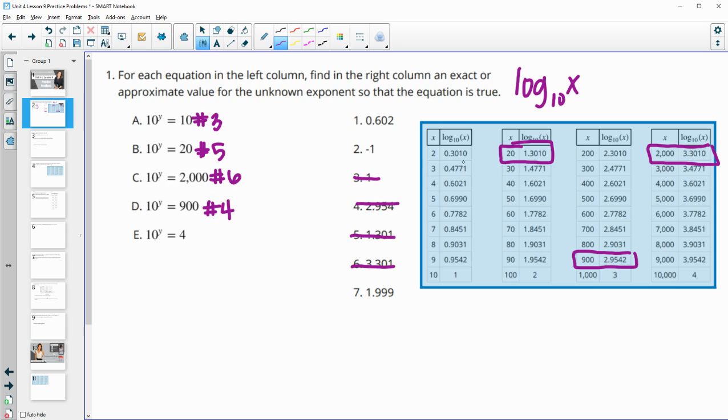And then here, 10 to what power gives us four. And that's 0.602. So that's number one.